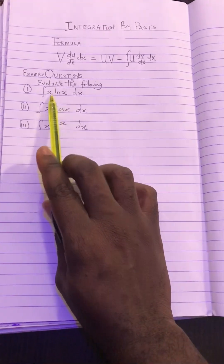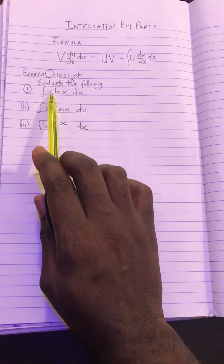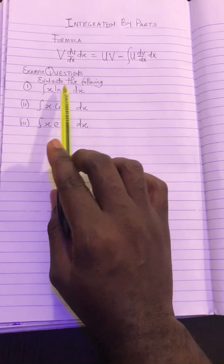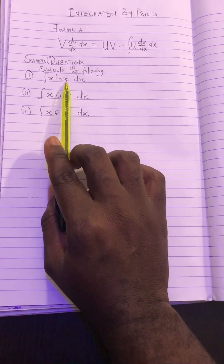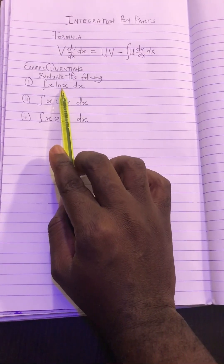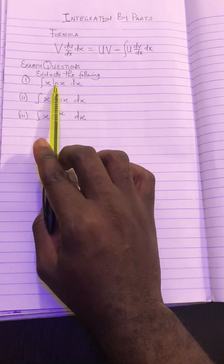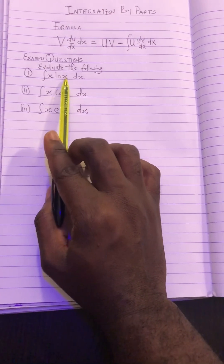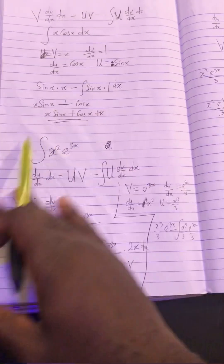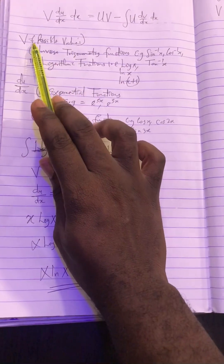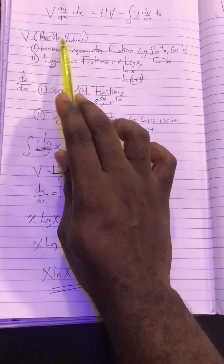If you look at a question like x ln x, it means one part of your question will be called v and the other part will be called du/dx. You're going to break up your question into two parts — one must be called v and the other must be called du/dx. I want to give you rules on which should be v and which should be du/dx.